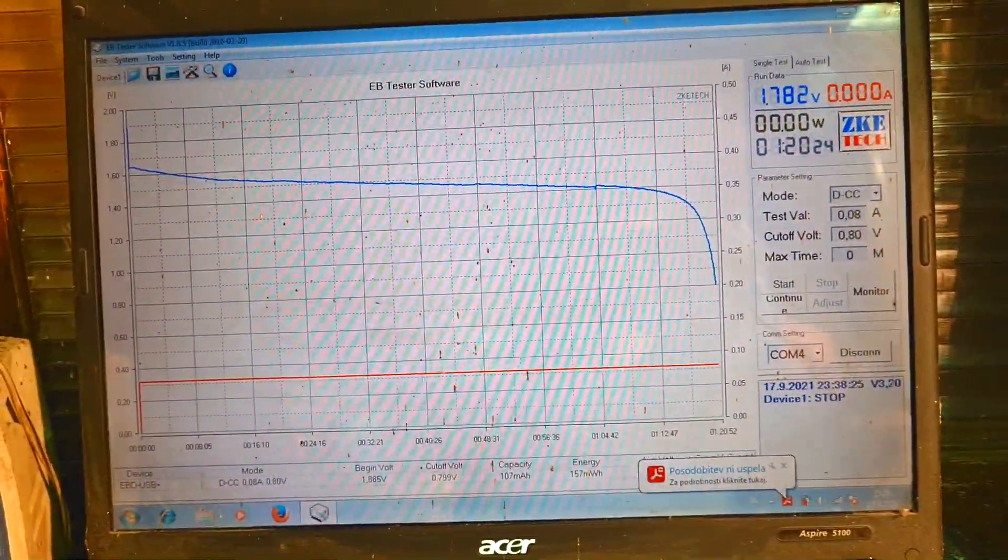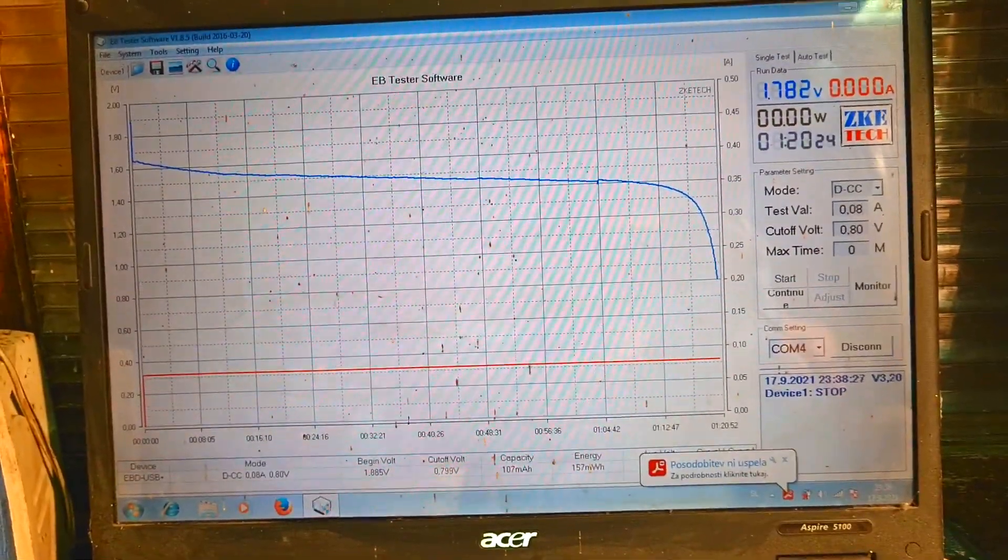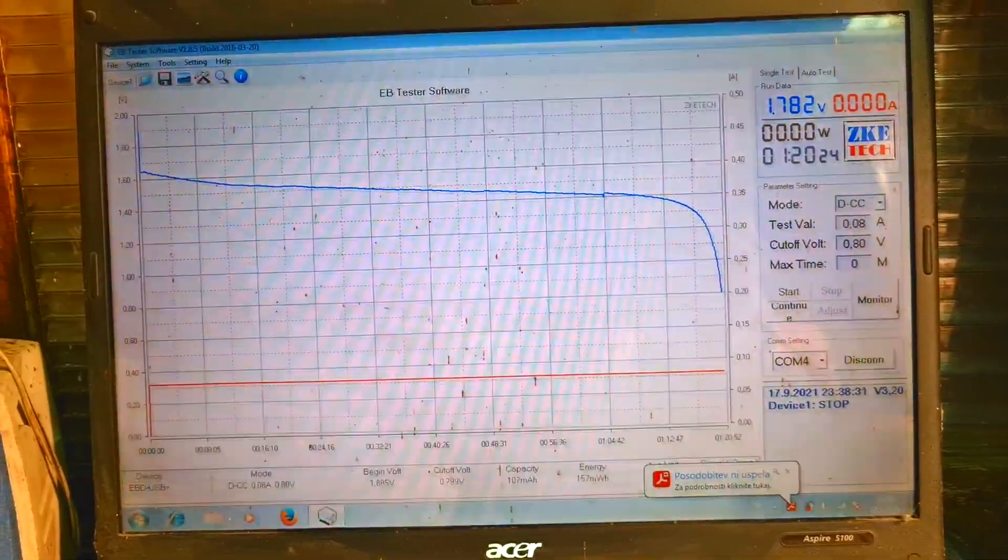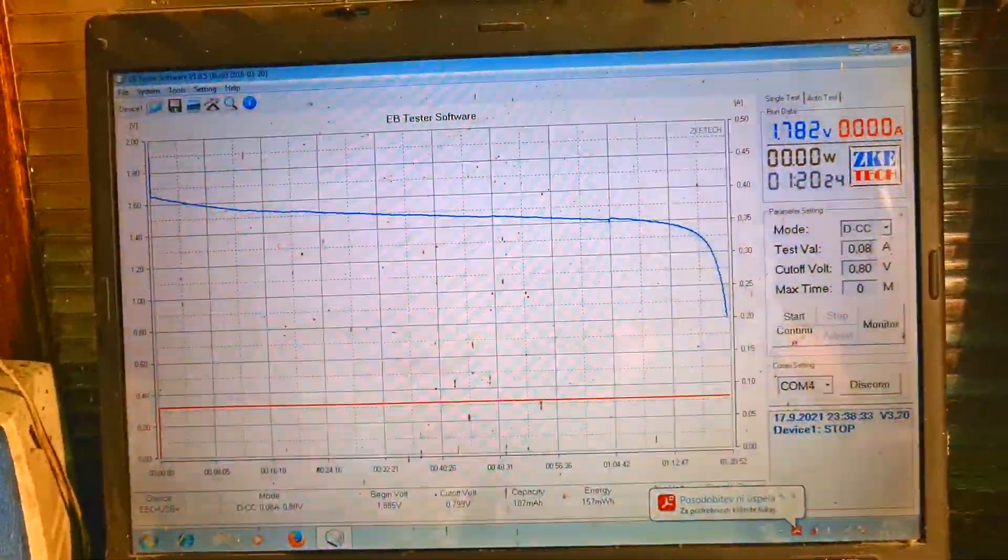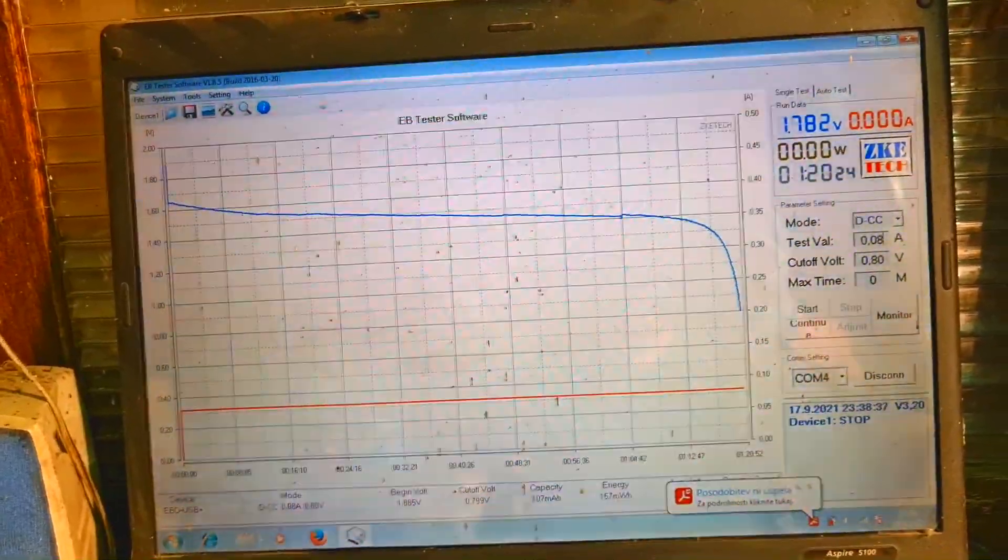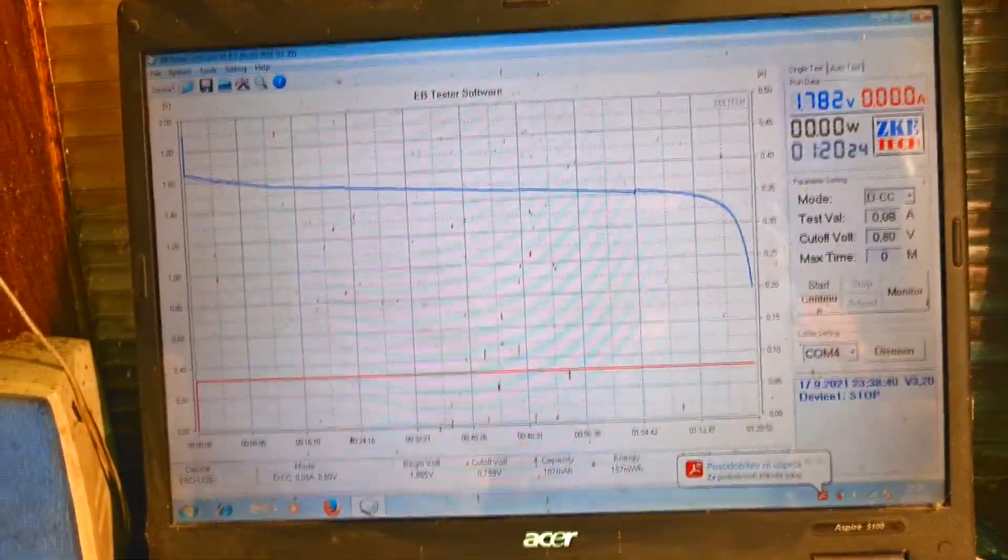This cell ran for 1 hour and 20 minutes on 80 milliamps load, so I get a capacity of 107 milliamp hours and energy of 157 milliwatt hours, which is also really impressive for this small cell.